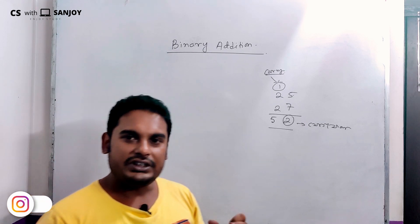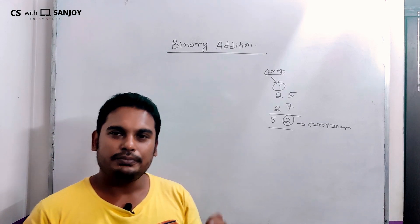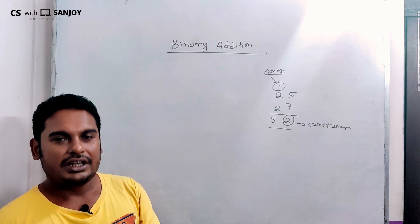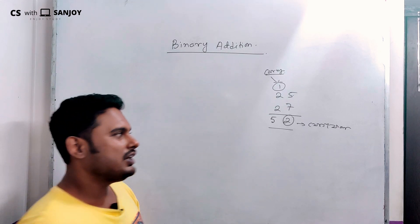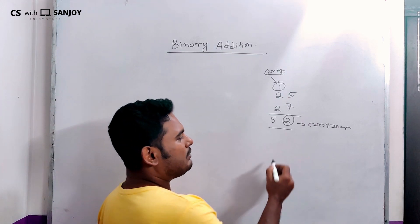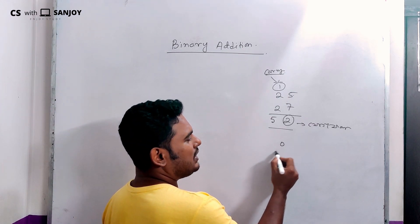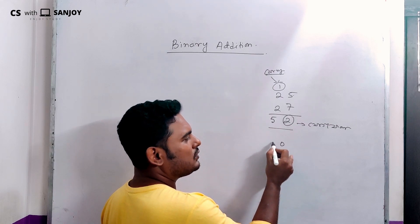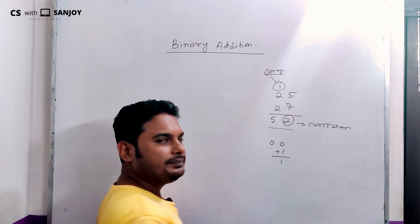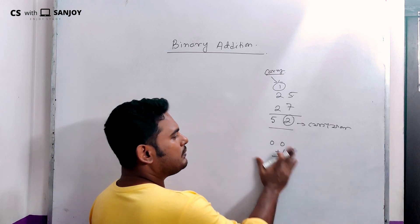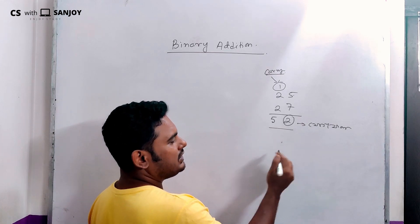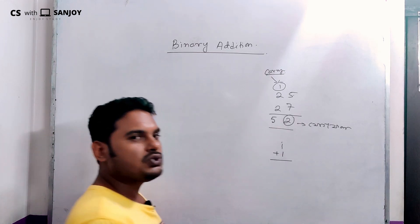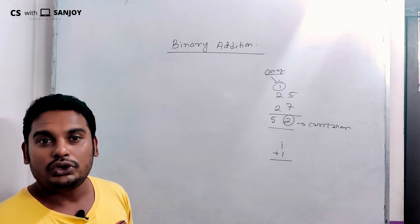The binary number system is a positional weighted number system, just like decimal. In this case, when we have 0 and 1, the result is 0. However, when we have 1 and 1, we have 2.